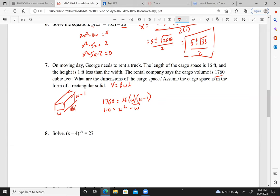So here I can move my 110 over, and I have W squared minus W minus 110 equals 0. So factoring this, this is negative, so one of them is positive, one of them is negative. This is negative, so the larger one is negative. We're looking at 11 and 10.